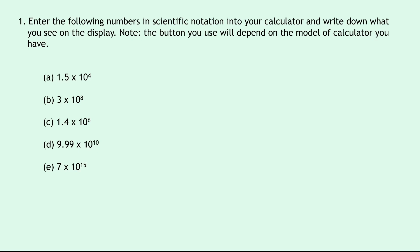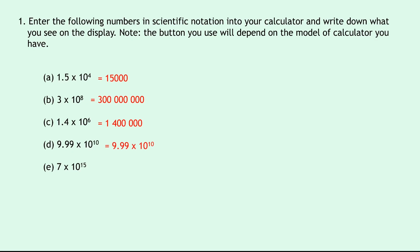For Part A, 1.5 times 10 to the 4 — input that into your calculator and you should get 15,000. Part B is 3 times 10 to the 8, which should give you 300,000,000. Part C: 1.4 times 10 to the 6 gives 1,400,000. Part D: 9.99 times 10 to the 10 — if you put that into your calculator it will just output the same thing. Similarly for Part E, 7 times 10 to the 15 will just spit back out the same thing. The reason is the numbers are too large to fit on your calculator display, so they just appear in scientific notation again.